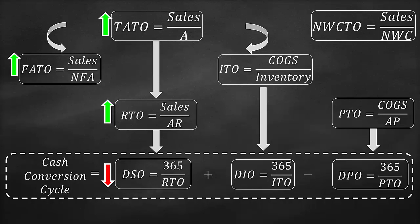It is also better to have a higher inventory turnover ratio and a shorter days inventory outstanding ratio. It is better to have a payables turnover ratio that is lower and a days payable outstanding that is longer. It is better to have a shorter cash conversion cycle and a higher net working capital turnover ratio.